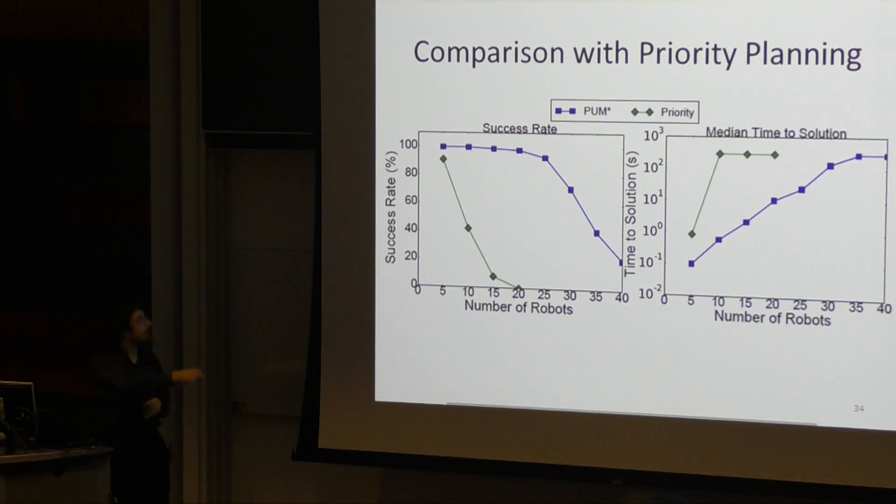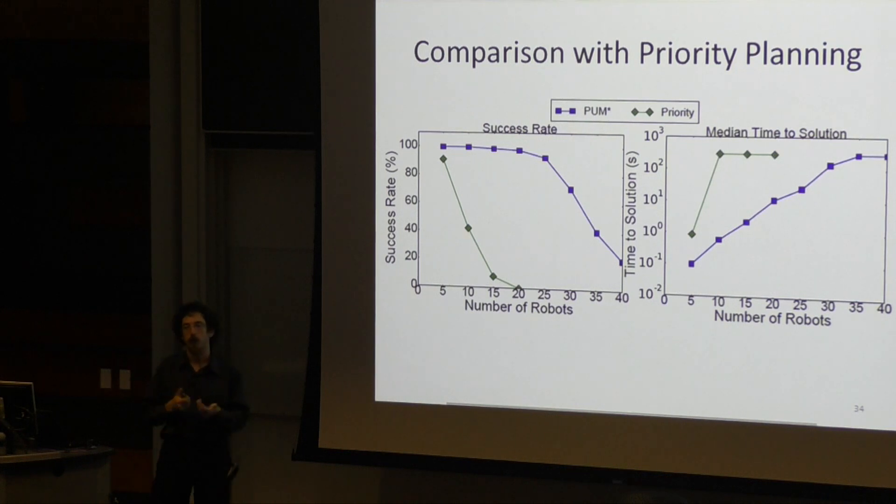As you can see, UMSTAR, actually a variant that again we don't have time to get into, can handily outperform just running a priority planner in belief space, indicating that these more powerful, more sophisticated MAPF solvers actually do carry some benefit.